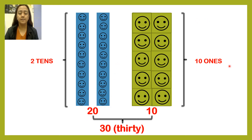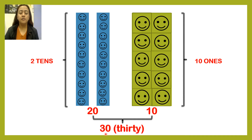Now let's go to the ones. Let's count: one, two, three, four, five, six, seven, eight, nine, ten. Ten ones, which is equivalent to ten. So we have twenty and ten, which is equivalent to thirty. So we have the numeral thirty and the word thirty.